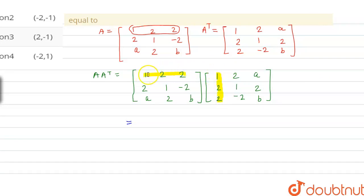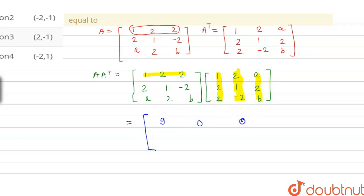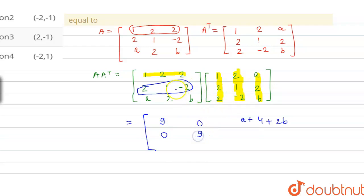For row 1 with column 1: 1×1 + 2×2 + 2×2 = 9. Row 1 with column 2: 2 + 2 − 4 = 0. Row 1 with column 3: A + 4 + 2B. For row 2 with column 1: 2 + 2 − 4 = 0. Row 2 with column 2: 4 + 1 + 4 = 9. Row 2 with column 3: 2A + 2 − 2B.